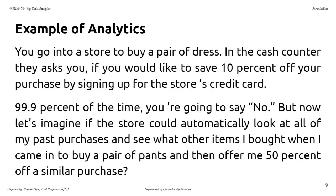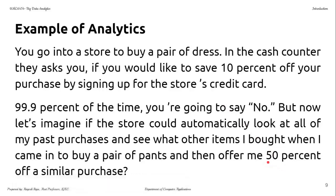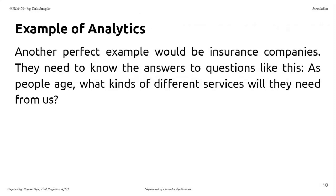The system scans through all your previous purchases and, finding you are a regular customer, offers you 50% off on a similar purchase based on your past buying history. Obviously, people will prefer the 50% off over the generic 10% credit card offer. There is a huge amount of data from multiple customers on a daily basis, and from all those details the system picks out your specific purchase history and comes up with a personalized offer. This is one example where Big Data Analytics is implemented.